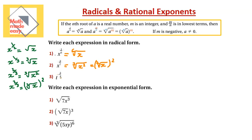For t to the power of negative 3 over 4 — now I have an issue. It's negative, and a negative exponent means it goes to the denominator, making it 1 over t to the power of 3 over 4. So changing it to radical form gives the 4th root of t cubed, or 1 over the 4th root of t, all cubed. Both cases are the same answer.